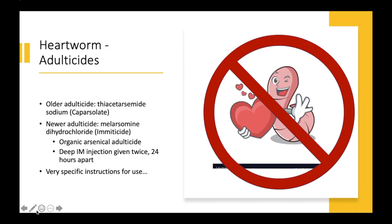Looking at heartworm adulticides: there used to be one on the market called caparsolate. It had some pretty bad side effects — it was expensive and not ideal — so we tend not to ever use caparsolate anymore. However, it's good to know about it in case somebody references it. The newer adulticide is melarsamine, also known by its trade name, Immiticide. This is an organic arsenical adulticide — essentially arsenic as an ingredient.